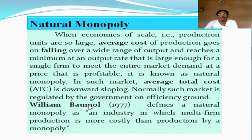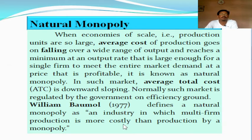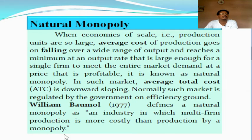William Baumol, one of the renowned economists, defines natural monopoly in a very beautiful manner — an industry in which multi-firm production is more costly. It means for a particular commodity, more than one firm's production becomes more costly than production by a single firm, that is, production by a monopoly firm. When more than one firm goes to produce that particular commodity, it will become more costly. That is the reason natural monopoly emerges.